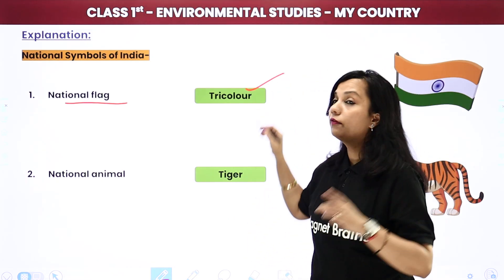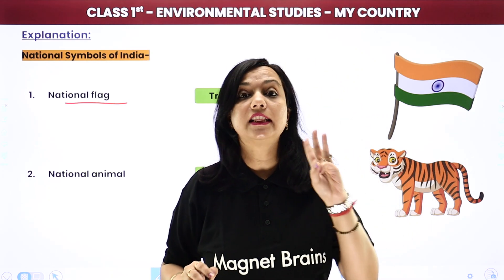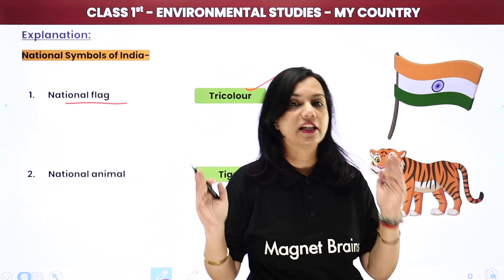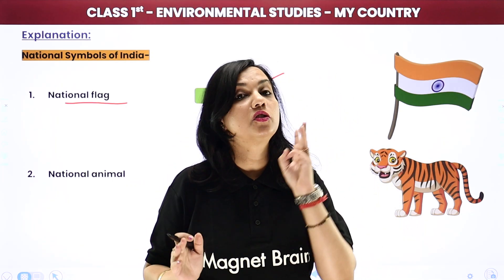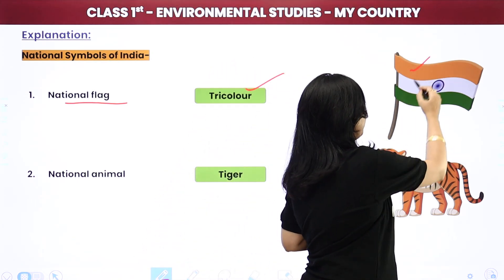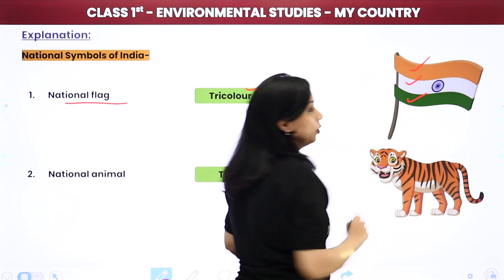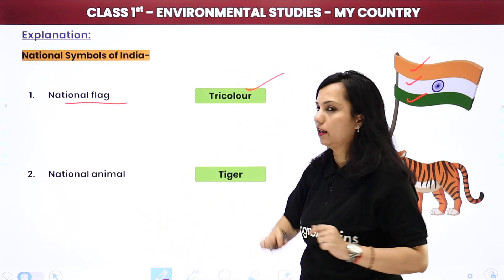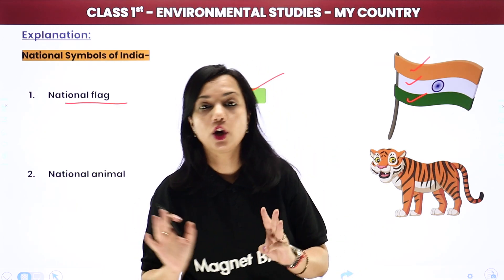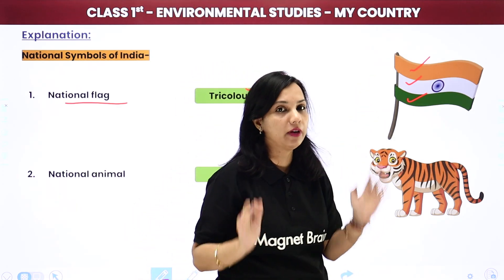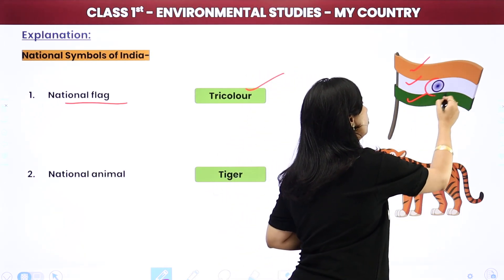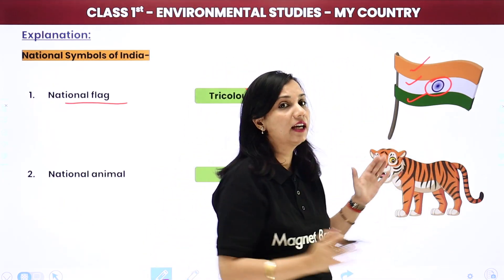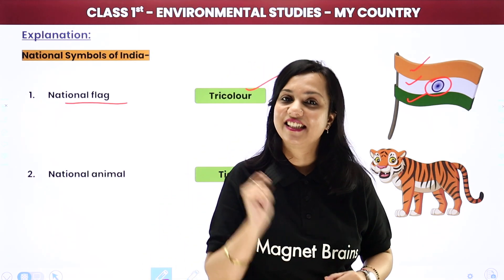Our national flag is of tricolor. Tricolor matlab kya hota hai? Teen color ka hai. Tri matlab three, color matlab rang. Toh haamara jo national flag hai children, that is of three colors - kaun kaun se color ka hai? Saffron, white aur green. We have three colors in our national flag, tabhi bol rahe hain tricolor. Aur beech pe jo aap dekh rahe ho, yeh hai blue color ka wheel. Is tarah se haamara national flag ban jaata hai, jis ko hum Tiranga ke naam se bhi jaante hain.